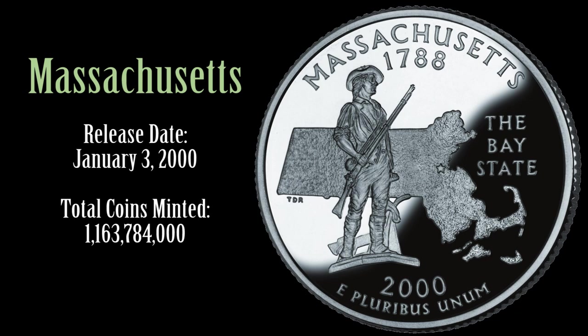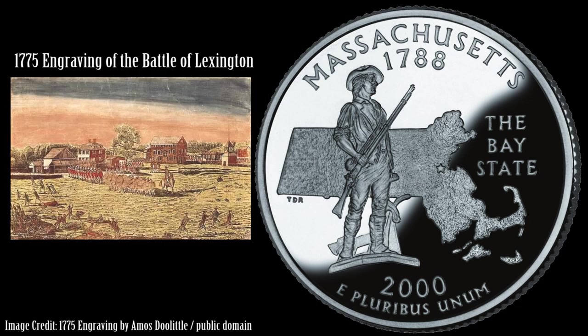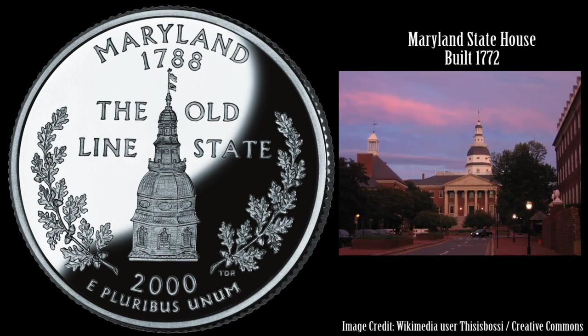Massachusetts Quarter features an outline of the state with the Concord Militiamen of 1775 statue that was erected in 1875. The statue commemorates the militiamen who responded to stand against British forces in the first battles of the American Revolution at Lexington and Concord on April 19, 1775. The caption of the Bay State appears to the right. Maryland's Quarter features the dome of the Maryland State House in Annapolis. The building dates to 1772 and is the oldest state capitol building in continuous legislative use.